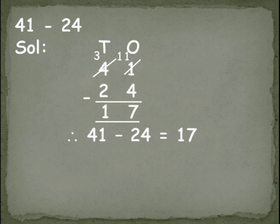In all these — addition in expanded form and column method, and subtraction in expanded form and column method — you have with regrouping and without regrouping. Practice these bits, children. Get the sums from your content book, skill sheet, and volume book so you can practice more and it will be easy in the exams. Do well, prepare well, children. In the next class we will learn the next bits. Bye, children.